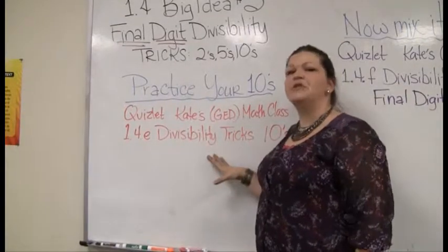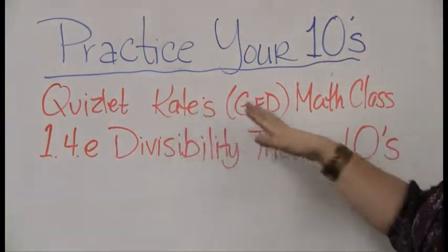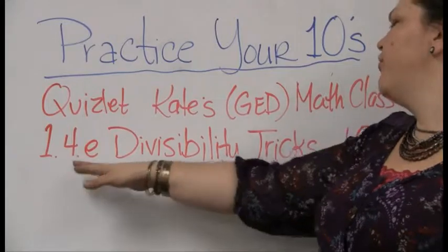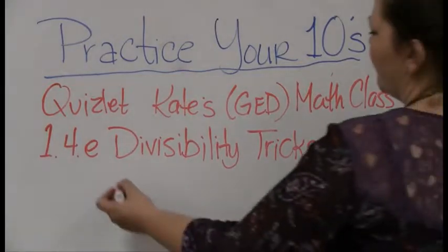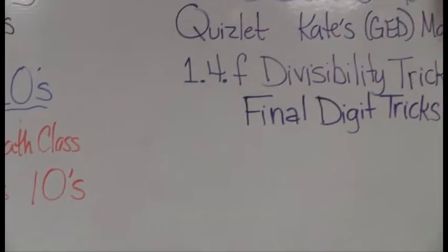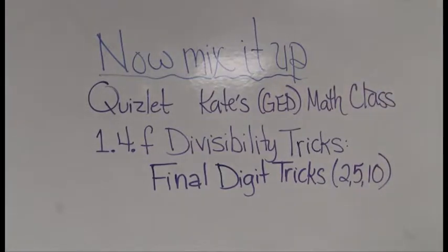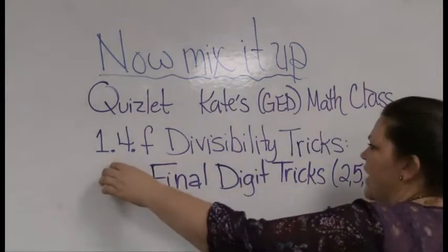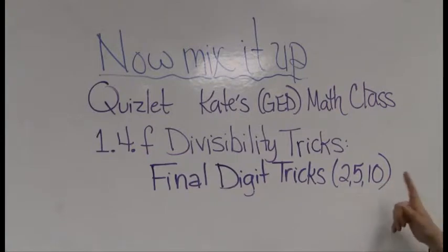Now it's time to practice. First, practice your tens — go to Kate's GED math class on Quizlet and find set 1.4E, the divisibility tricks for tens. Once you feel good with that, try set 1.4F, which mixes all the final digit tricks together — twos, fives, and tens combined. Things that make sense individually can get trickier when mixed up, so practice with learn mode. Once you're comfortable with all of them, join me for the next video where we'll look at other divisibility tricks.